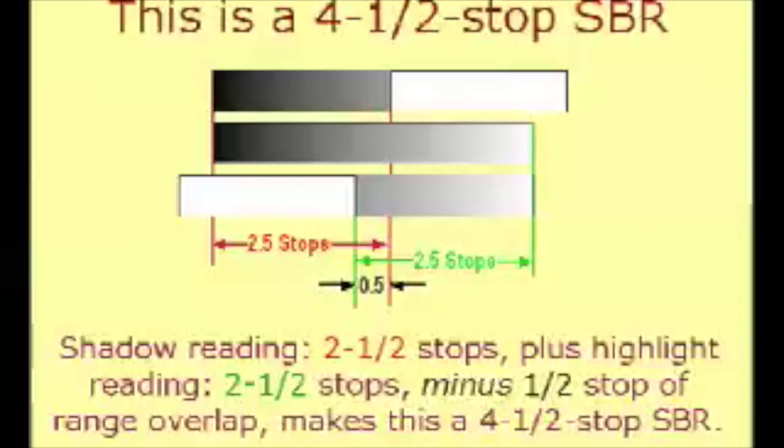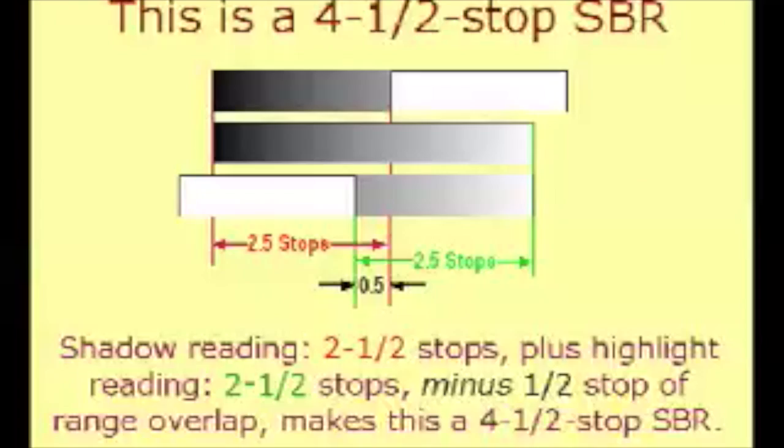Because the incident meter's own range is 5 stops, a single incident reading will represent both high and low readings, so the SBR is necessarily 5 stops. This very short range is usually appropriate for two-dimensional subjects in uniform illumination, but it will interpret three-dimensional subjects harshly, with probable loss of highlight or shadow detail, or perhaps both.